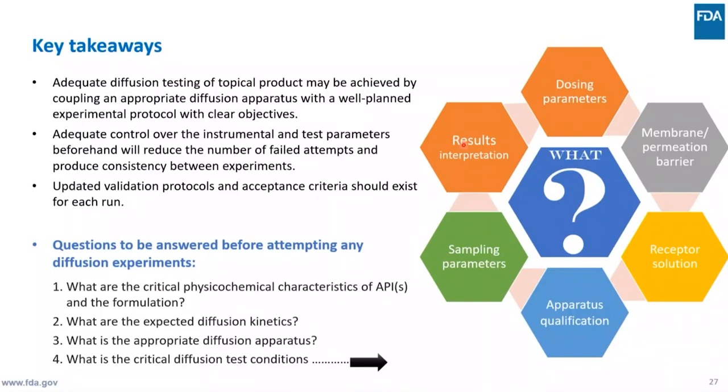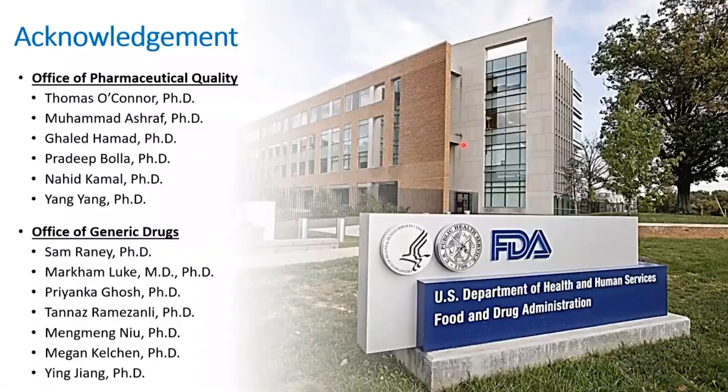Before attempting any diffusion experiment, we need to ask: What are the critical physicochemical characteristics of the API and formulation? What is the expected diffusion kinetics? What is the appropriate apparatus? What are the critical diffusion test conditions — dosing parameters, membrane, receptor solution? Is the apparatus qualified? What are the sampling parameters and result interpretation criteria? I finish by acknowledging my colleagues in OPQ and OGD of FDA for their help with diffusion experiments on many drug products. Thank you for listening.